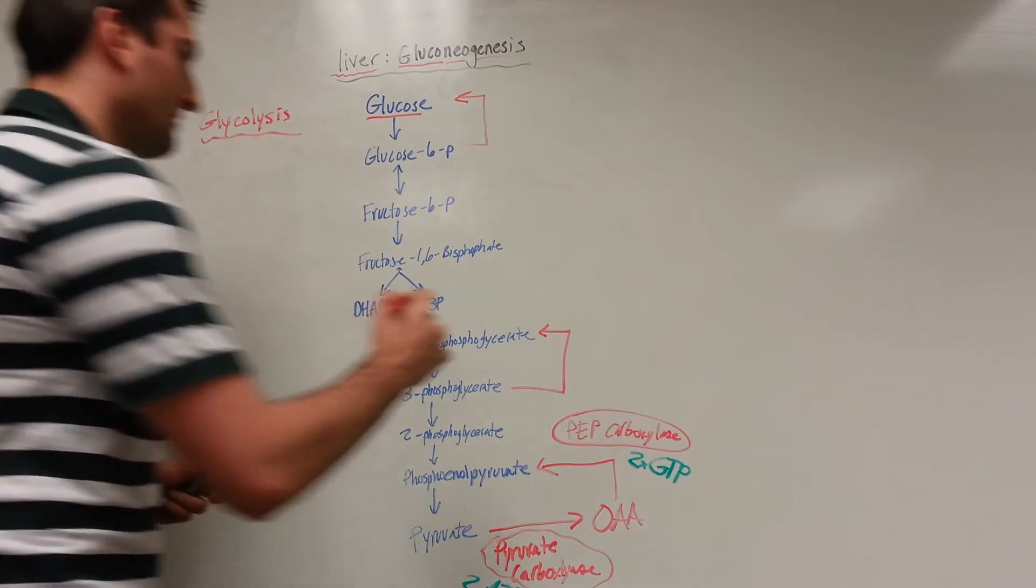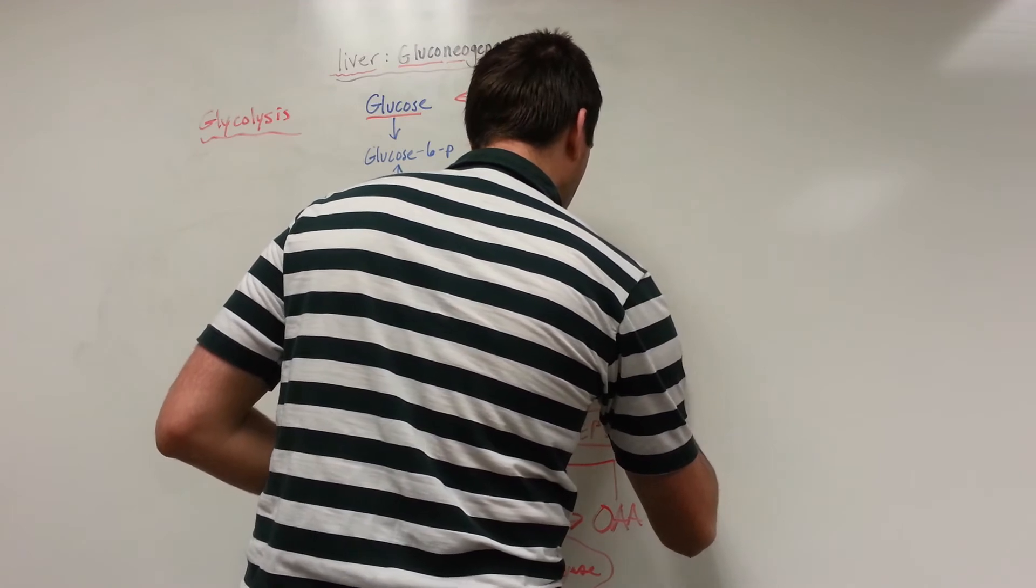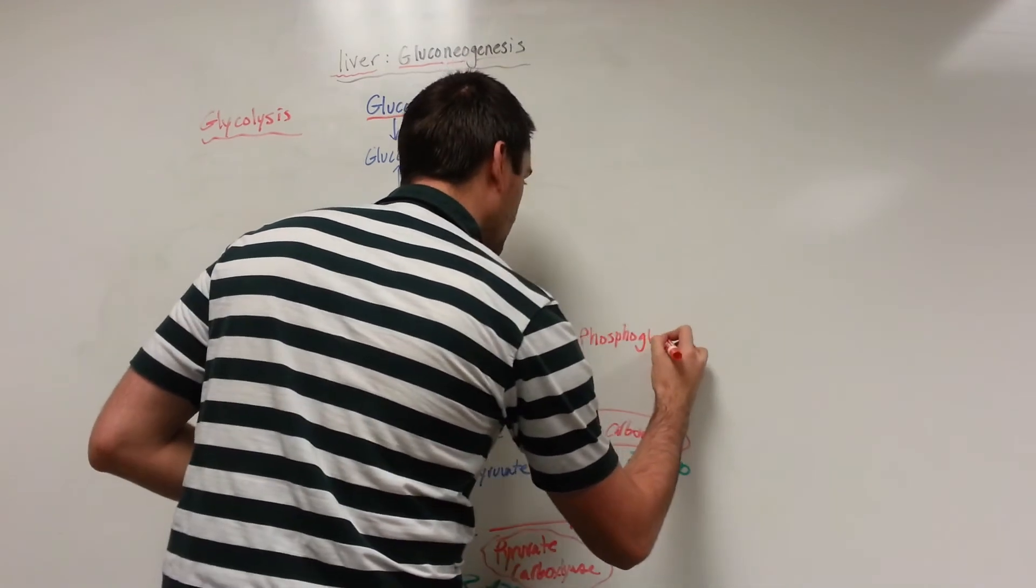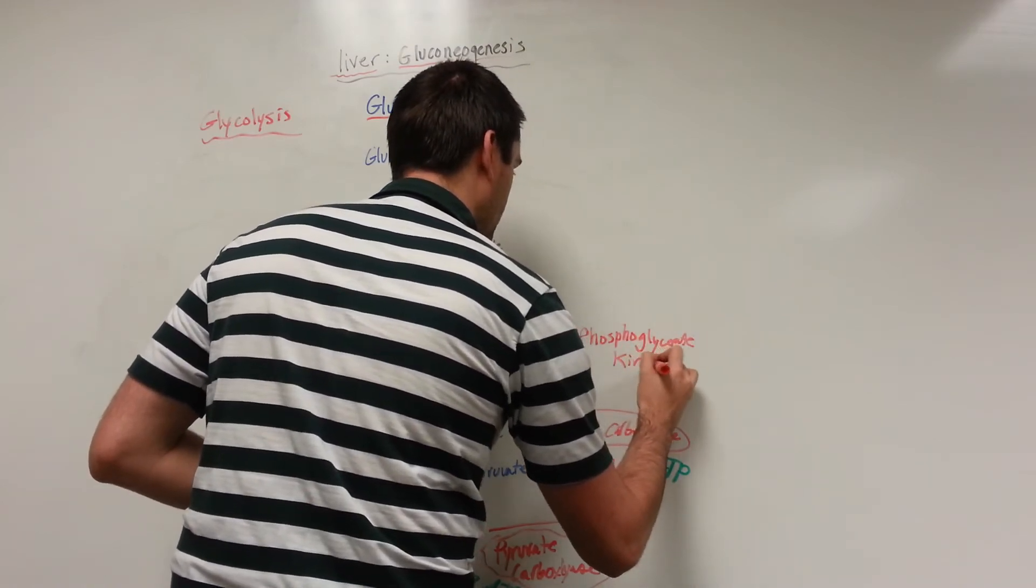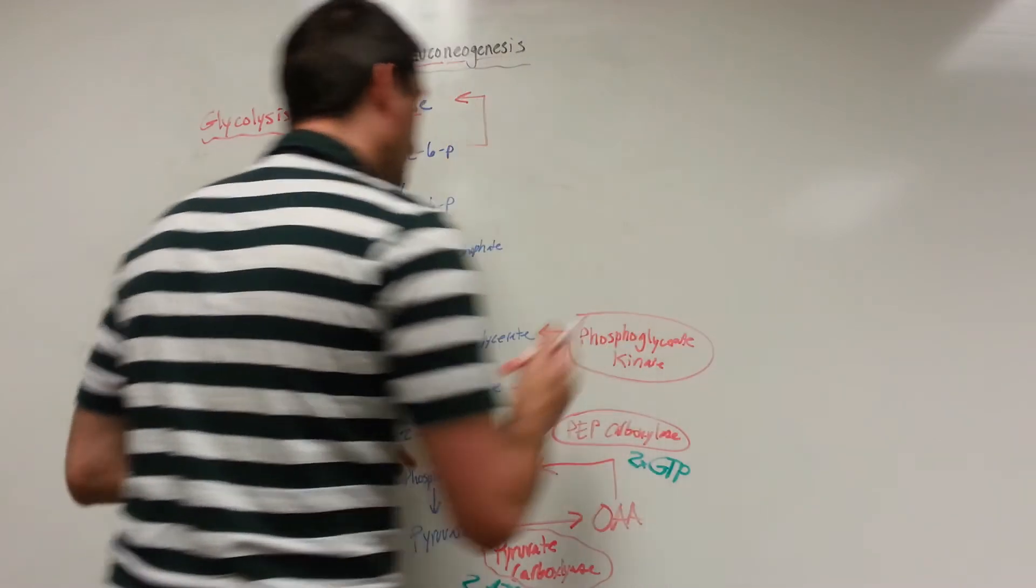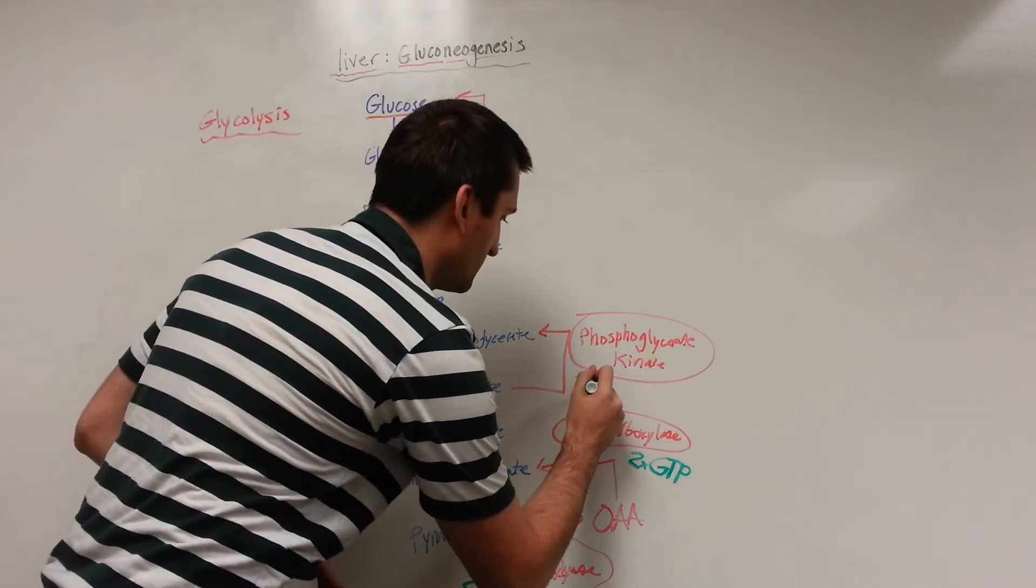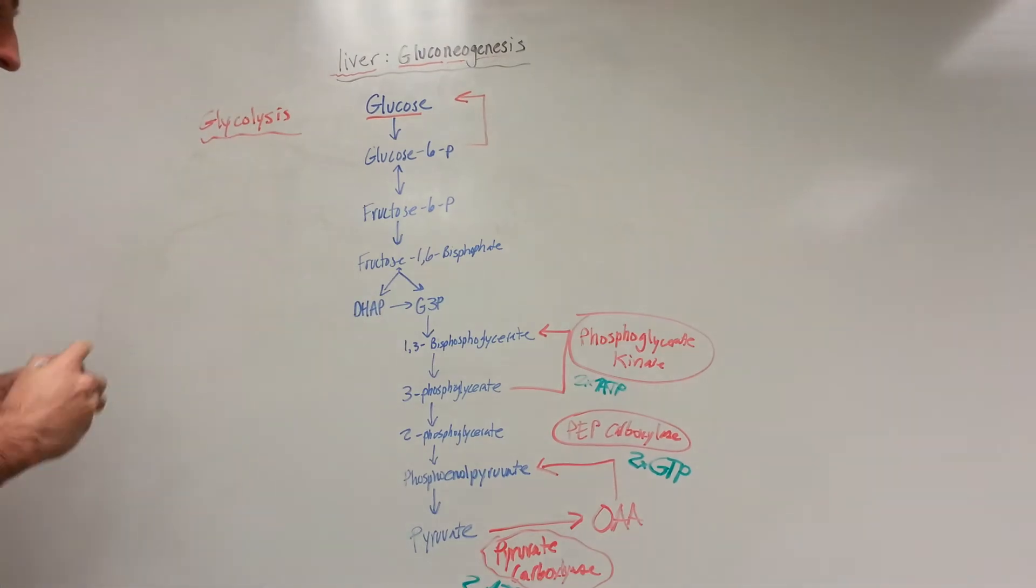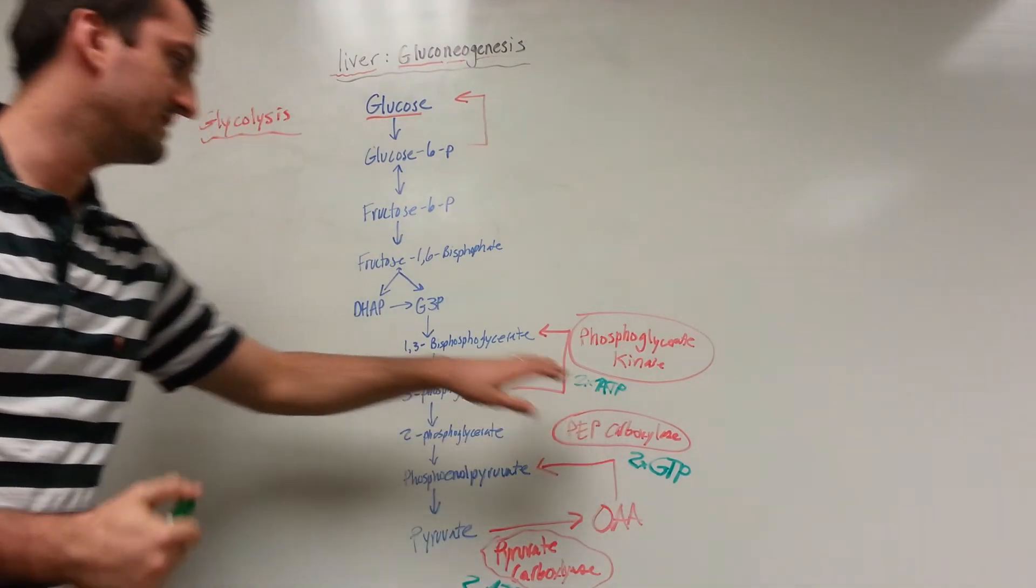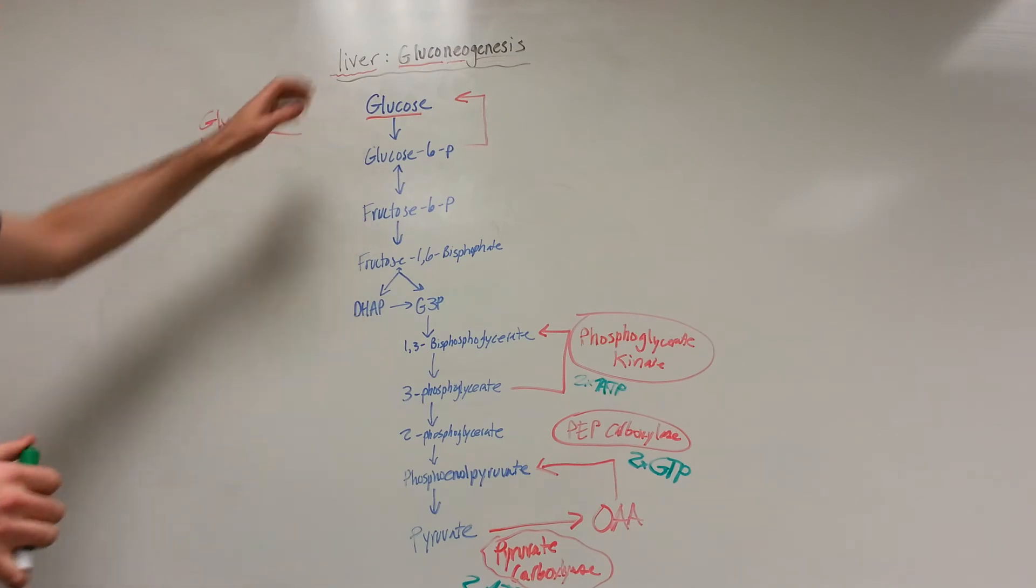That enzyme is going to be phosphoglycerate kinase. And as you can imagine, that's also going to require some ATP to be formed. So I said it'll require a total of six ATP - here's two, four, and six. We've already invested all of our ATP.